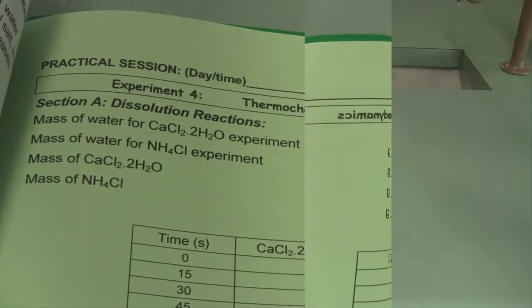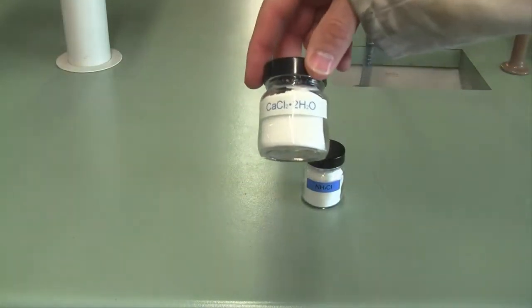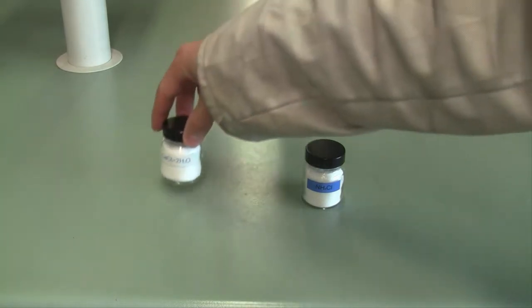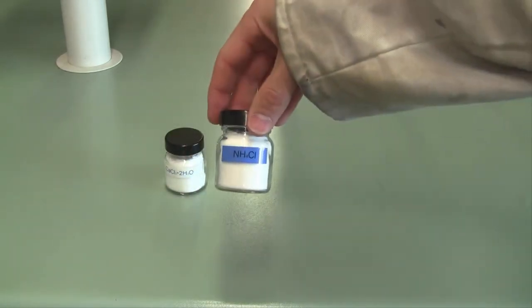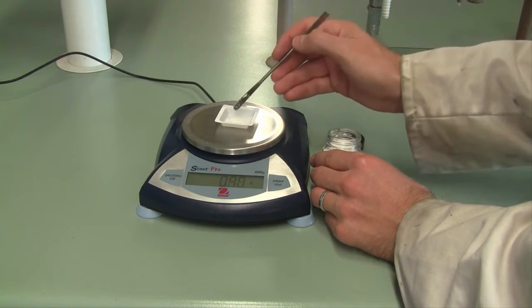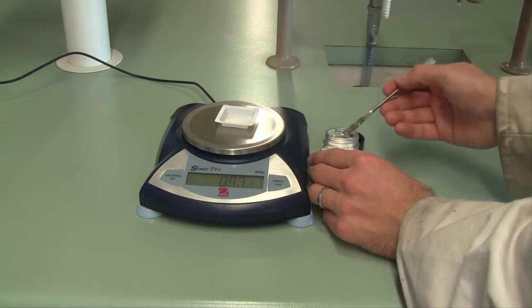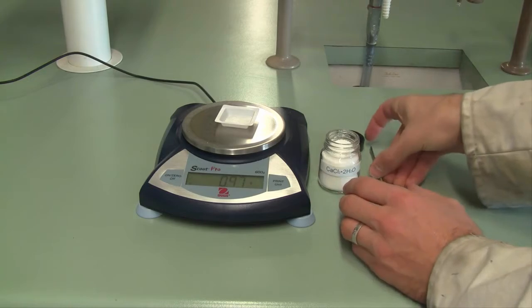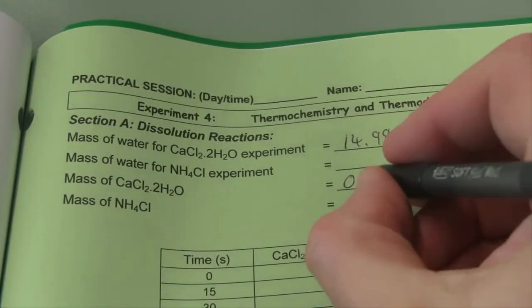We're then going to look at the heat of dissolution of two ionic compounds: calcium chloride dihydrate and ammonium chloride. Starting with the calcium salt, weigh out approximately one gram on a top loading balance. Make sure you note down the exact mass that you added in your notes.